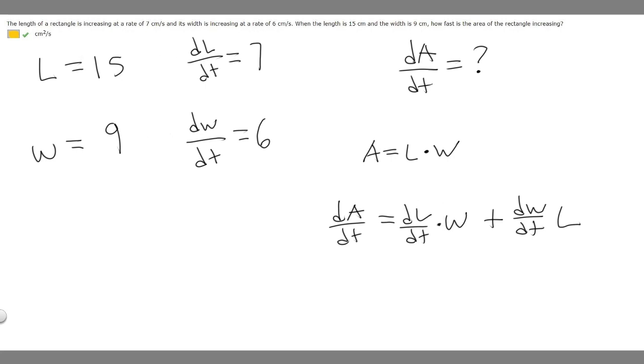So dL/dt is 7, so we just plug in 7. And then W is 9, so we plug in 9, and then we add it to dW/dt, which is 6. And then we multiply it by L, which is 15.